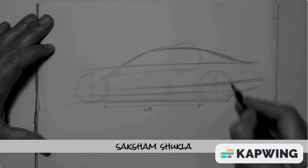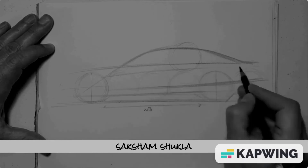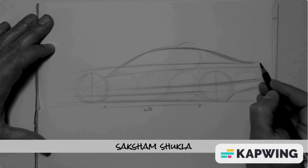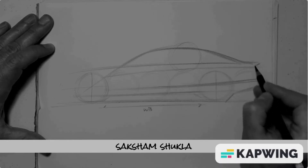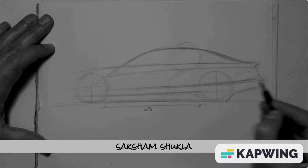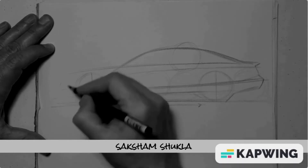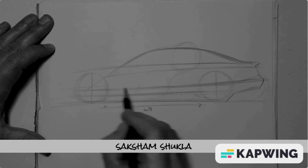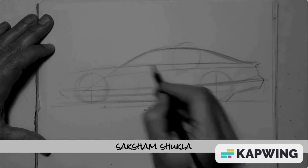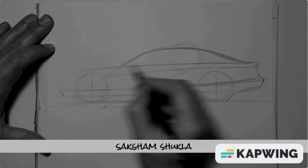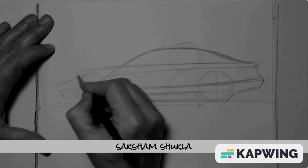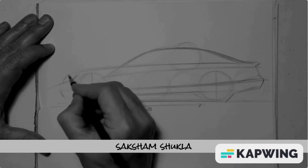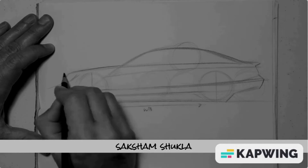It's important to draw through the form. Draw your character lines right through the wheels so everything flows together. The front overhang is going to be fairly short relative to the rear overhang.